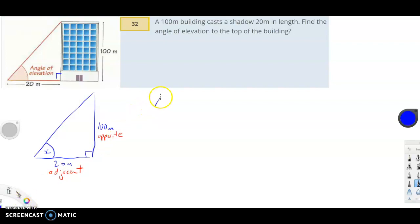Tan x equals the opposite over the adjacent. The opposite is 100, the adjacent is 20. Dividing by 20, we get tan x equals 5.